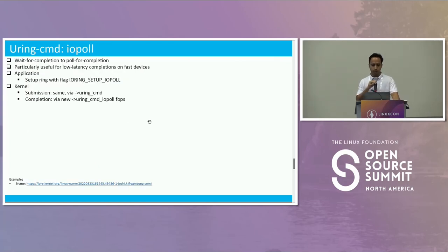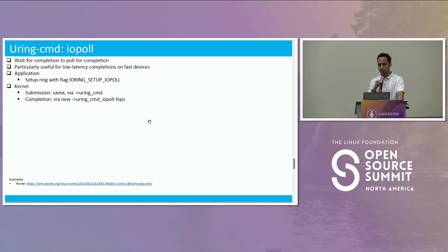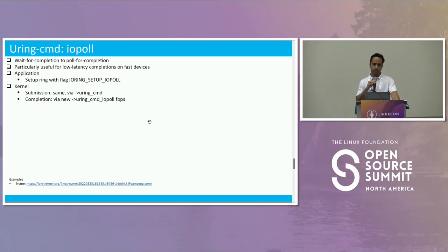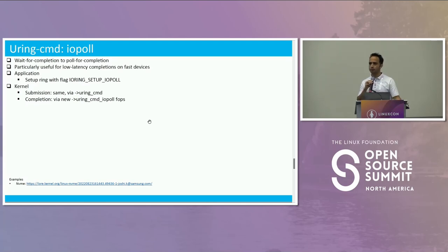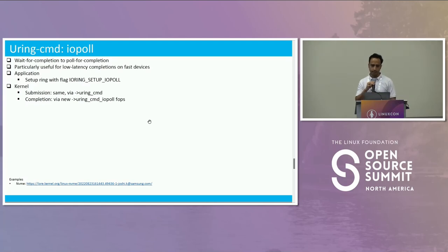Another capability is IOPOLL. IOPOLL is about not waiting for completion but polling for completion. If your operations are going to complete very fast, you probably wouldn't want to wait for them. You may get better efficiency by polling rather than sleeping through context switches. This is anyway available with regular operations like read and write, but for Uring command it is now available too. Application only needs to set up IORING_SETUP_IOPOLL — that's all. As far as the kernel provider is concerned, submission is the same — no change. For completion, you may have to implement a new callback called uring_cmd_iopoll.